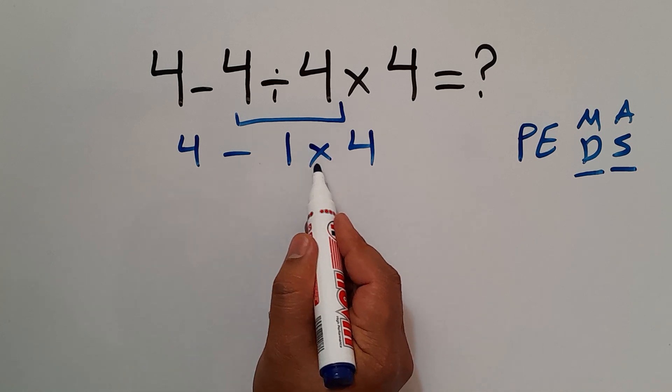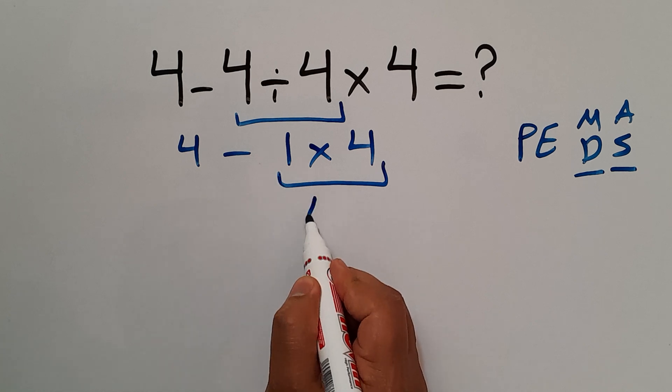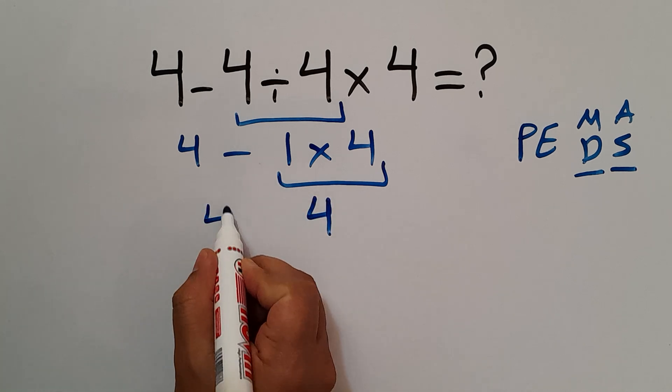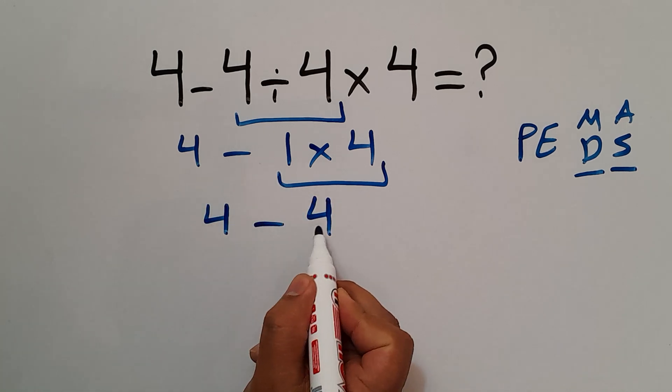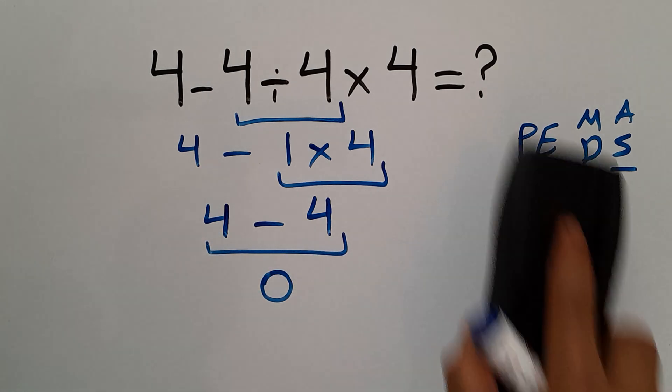Now, we have to handle this multiplication. 1 times 4 is just 4. So we have 4 minus 4, which equals 0. So our final answer to this problem is just 0.